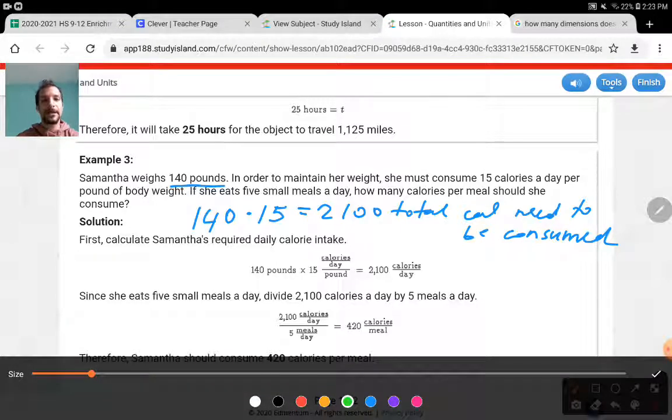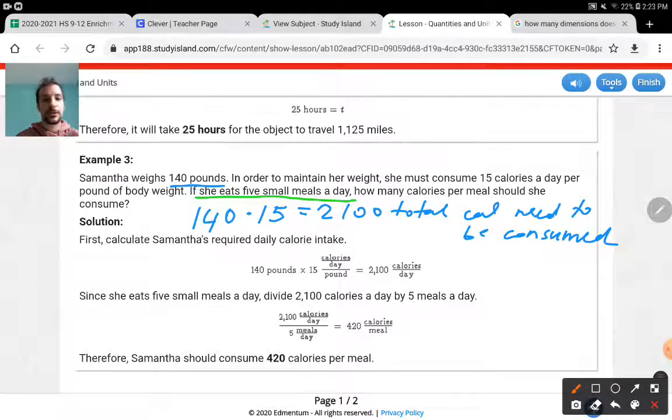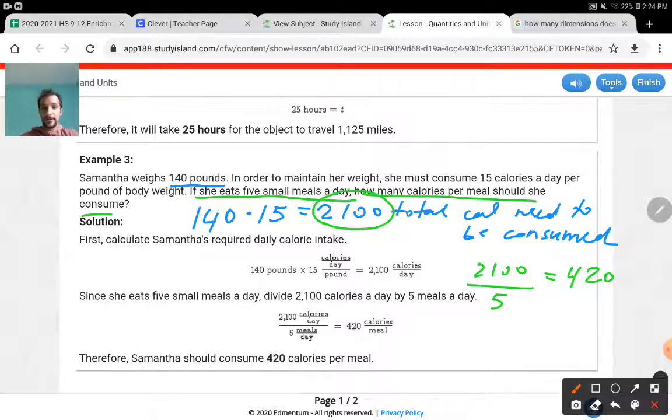Let's read the second sentence. It says, if she eats five small meals a day, how many calories per meal should she consume? So this is the total amount. And she eats five meals, right? And the question is, how many calories she needs to consume per meal? In total, there are five meals. And she needs to consume 2100 calories in a day. And for every meal, this would be my answer, 420 calories per meal. She needs to consume that amount.